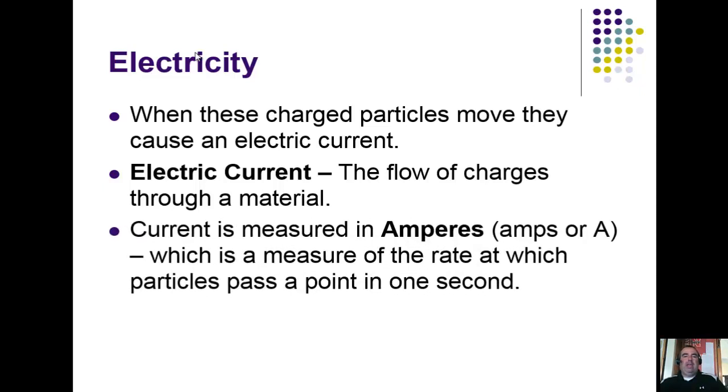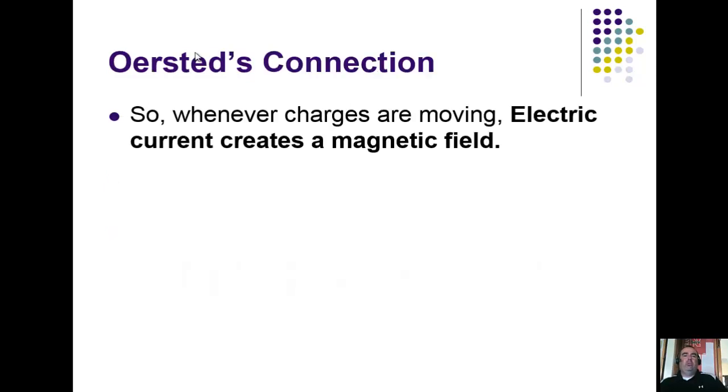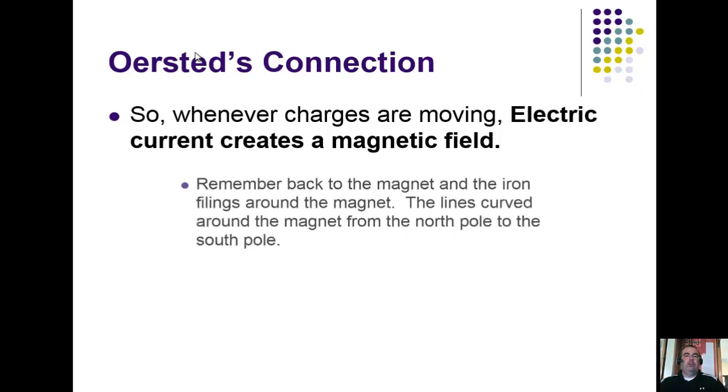Current is measured in amperes (amps or A), which is a measure of the rate at which particles pass a point in one second—the number of particles passing a point in a given amount of time, kind of like frequency when we talked about waves. Hans Christian Oersted's connection was this: Whenever a charged particle was moving, electric current created a magnetic field. Anytime you have a wire where electricity is passing through it, some magnetic field is going to be created because of these moving charges.